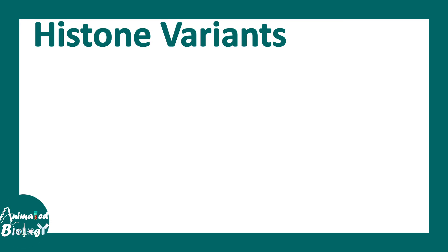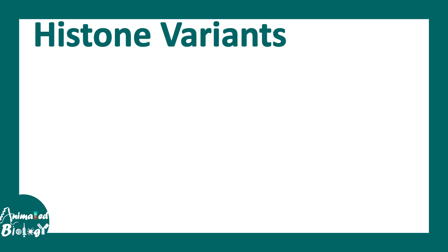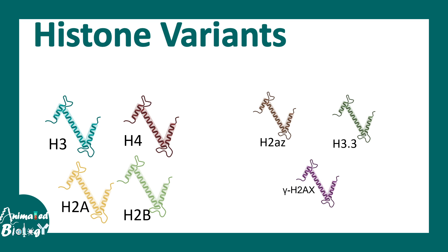In this video we'll talk about histone variants. When we think about histones, these names come to mind: H3, H4, H2A, and H2B. These are canonical histones found in all nucleosomes in our chromosomes. But alongside these histones, there are many other histone variants such as H2A.Z, H3.3, gamma H2AX, etc.